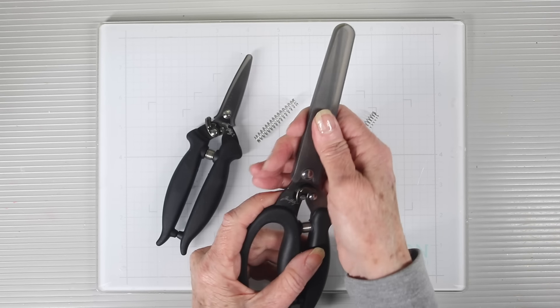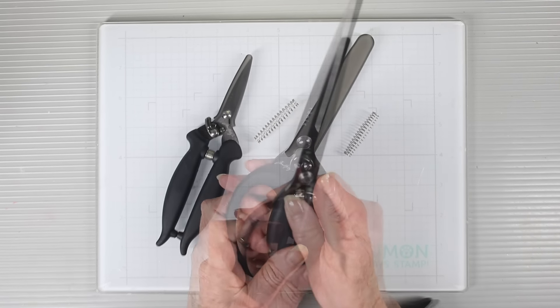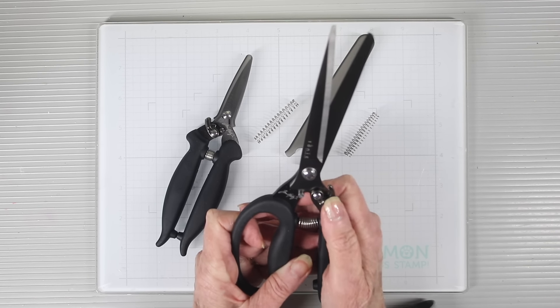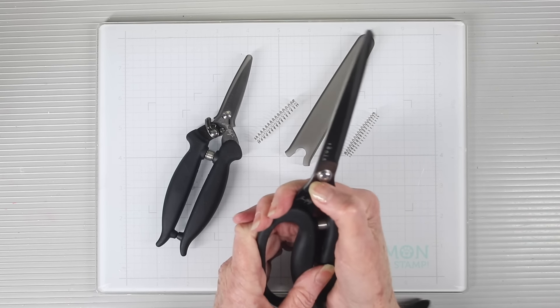The 9.5-inch scissors also has a protective cap and a similar mechanism. So with your thumb, you'll want to slide this over to unlock them and slide it back to lock.